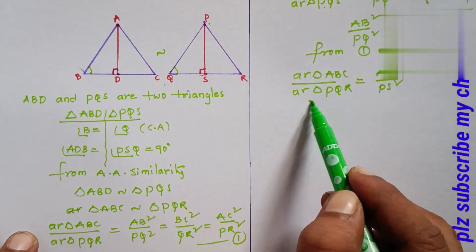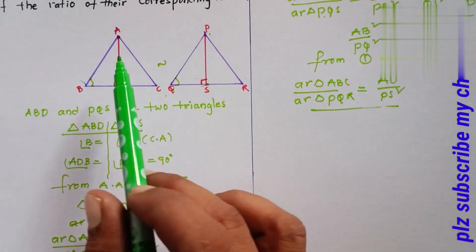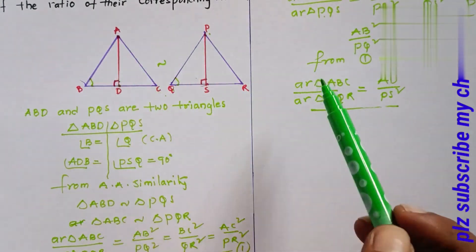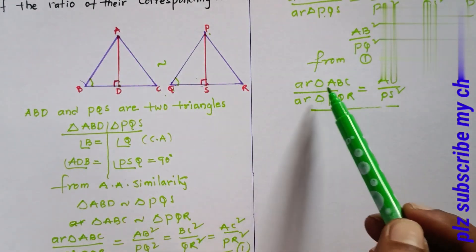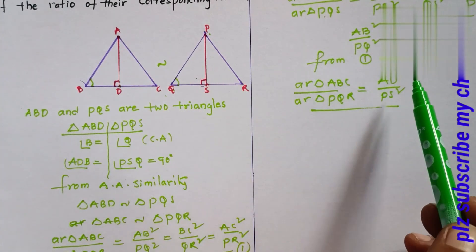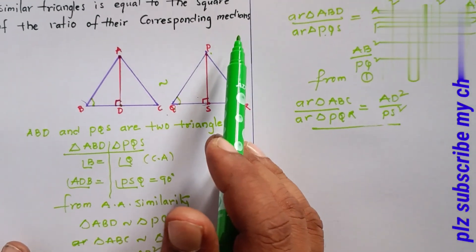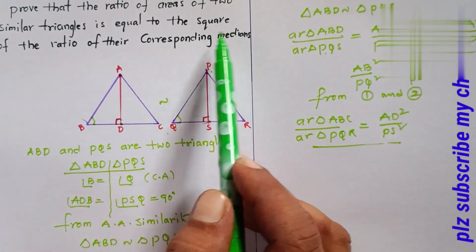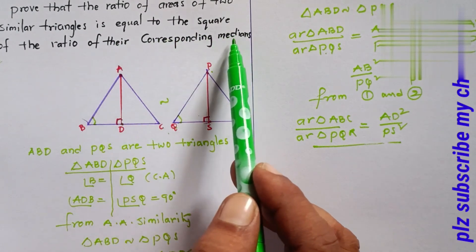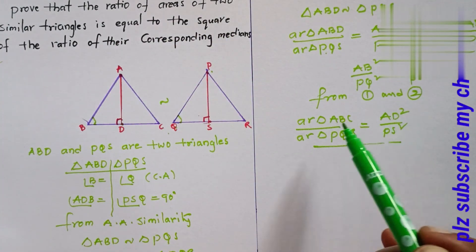From equations 1 and 2, AB² / PQ² equals AD² / PS². So the ratio of areas of the two similar triangles ABC and PQR equals the square of the ratio of their corresponding medians. Hence proved.